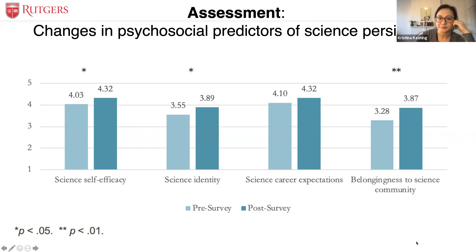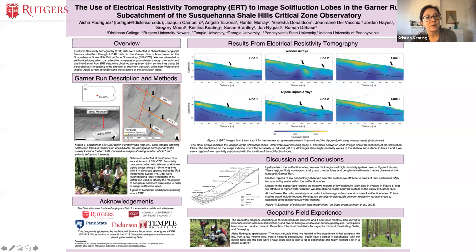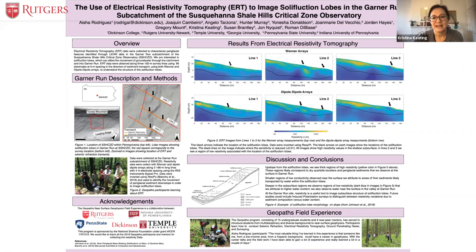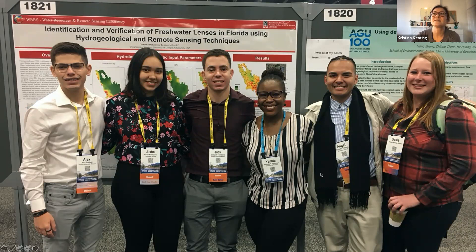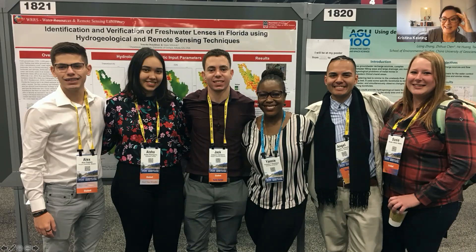By running this program, we're hoping to increase these psychosocial predictors and translate that long-term into student retention within the geosciences. Here's an example of a poster a student presented at AGU in the near-surface geophysics critical zone section — she examined all the resistivity data to understand the structure below solifluxion lobes within Garner Run. Here is a picture from AGU 2019 showing the students who participated in the program as well as the mentors — Jack, Yanni, and Angel were the mentors, with several student participants.